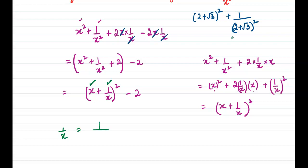So 1/x will be equal to 1/(2 + √3). Now we will have to rationalize it. So 2 + √3, in order to rationalize it, we will multiply it by 2 - √3. The numerator and the denominator will be multiplied by this factor.